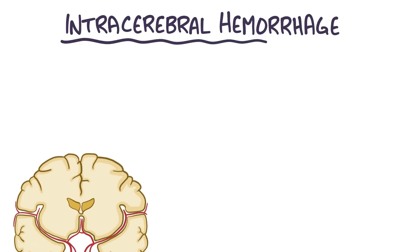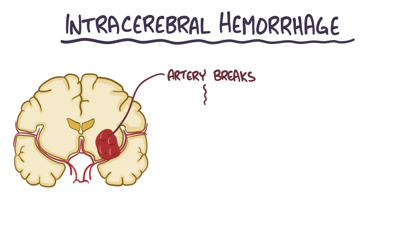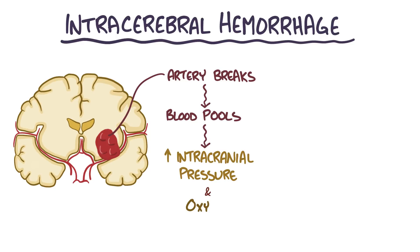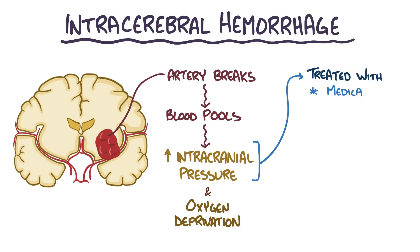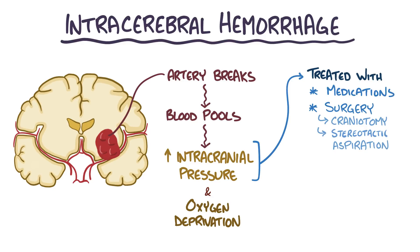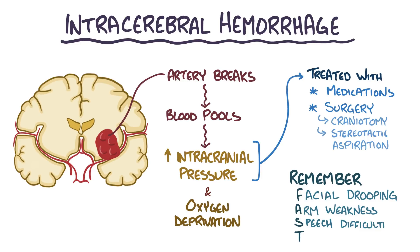As a quick recap: an intracerebral hemorrhage is a type of hemorrhagic stroke where an artery breaks within the cerebrum. A pool of blood forms, which increases intracranial pressure, and downstream tissue gets deprived of oxygen-rich blood. Intracerebral hemorrhages can be treated with medications aimed at controlling high intracranial pressure, as well as surgical interventions like craniotomy or stereotactic aspiration. The goal is to identify symptoms and re-establish blood flow to prevent long-term damage. A common acronym to remember is FAST: facial drooping, arm weakness, speech difficulties, and time.